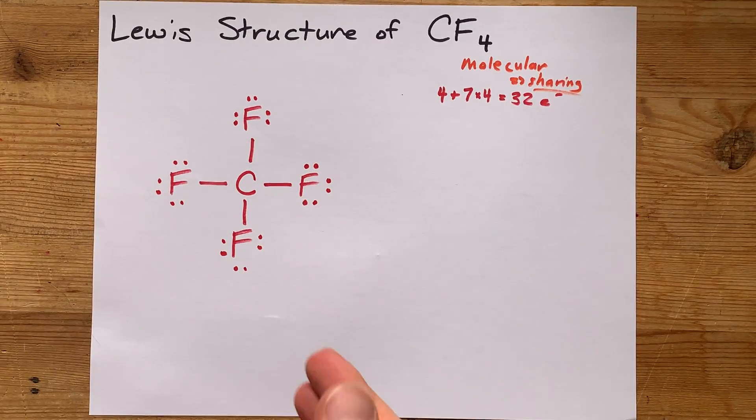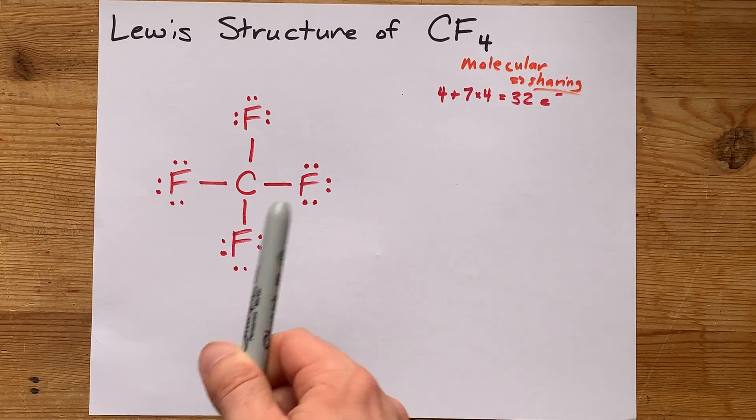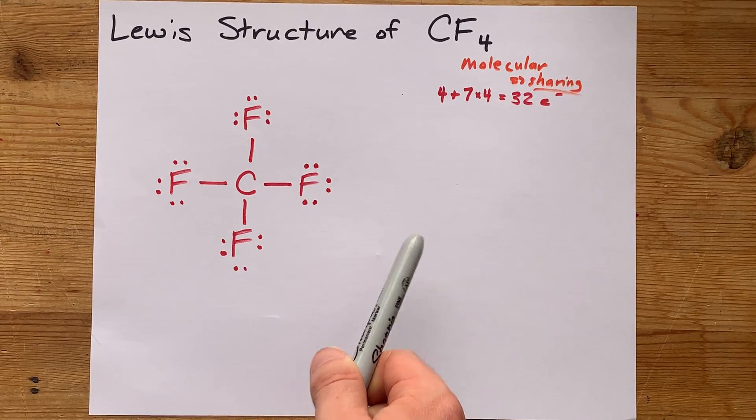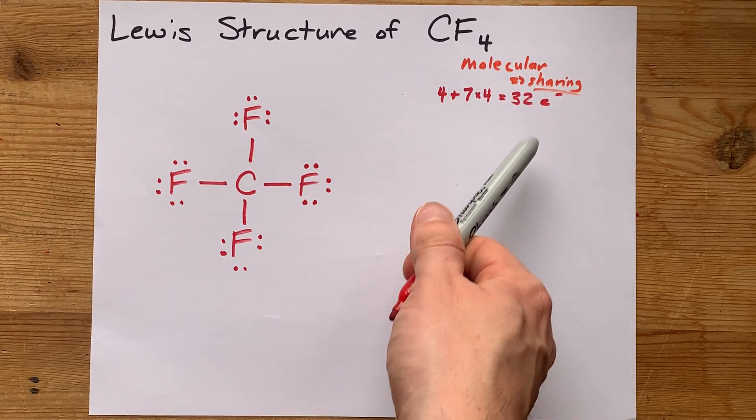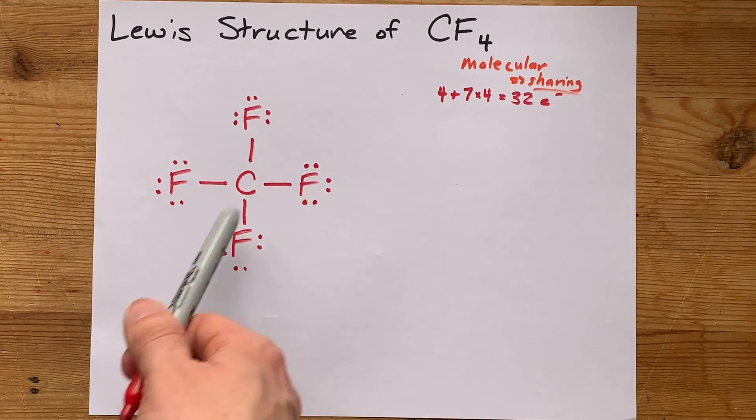Oh, that's the perfect fit, isn't it? Each of my fluorines now have 8 electrons around them, and my carbon also has a full octet, and I used the exact number of electrons that I was given.